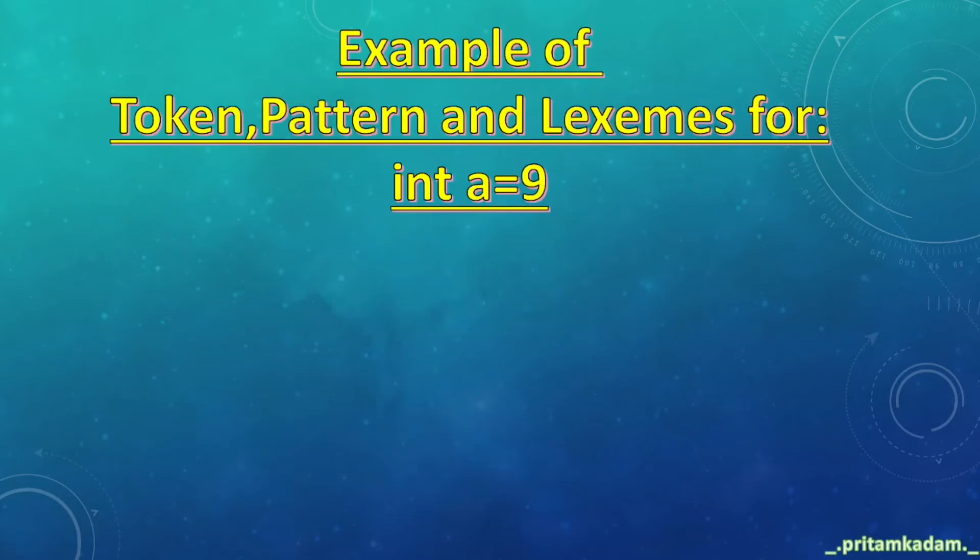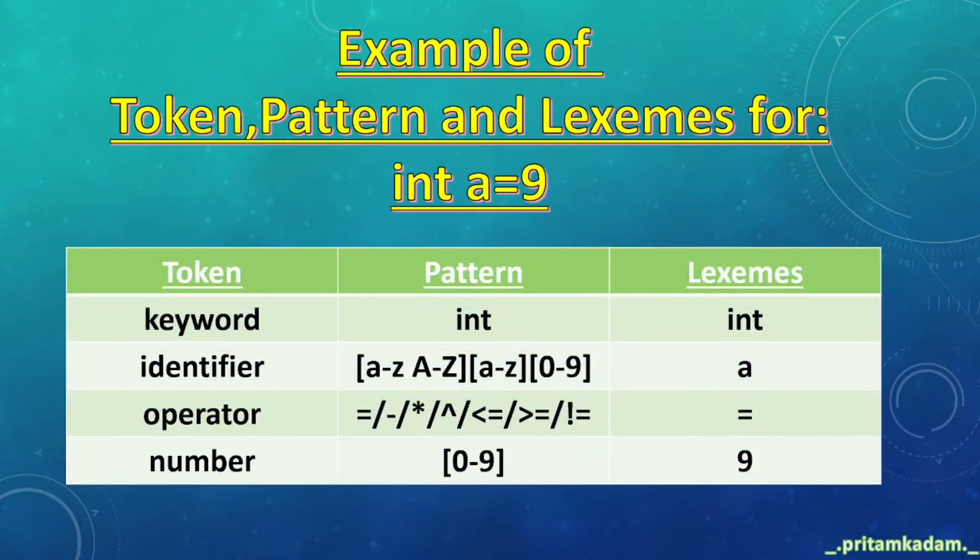Examples of token, pattern, and lexemes for int a=9. First, we will form a table: token, pattern, lexemes. Then we will write int a=9 in four columns. First, int is a keyword, so we write token as keyword. a is an identifier or variable, so we write identifier over there.